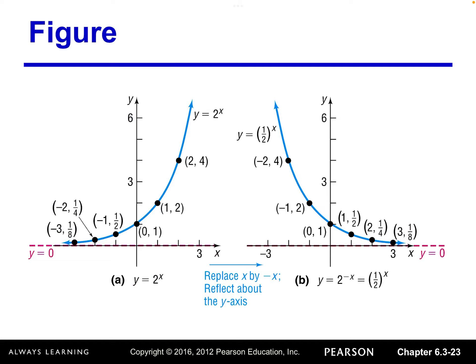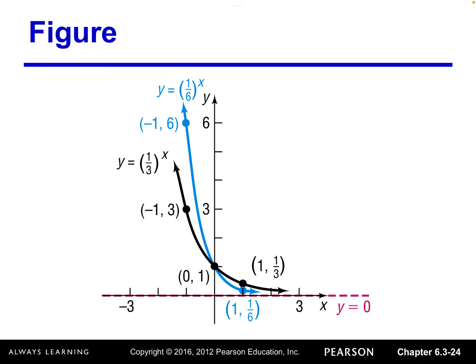We can compare these two graphs: this is the graph for 2 to the x power, and this is the graph for 1/2 raised to the x power. You can see clearly these two graphs are symmetric with respect to the y-axis. The same applies to y equals 1/6 to the x power — we use the graph of y equals 6 to the x power and do a reflection about the y-axis. Similarly, 1/3 to the x uses y equals 3 to the x power reflected about the y-axis.